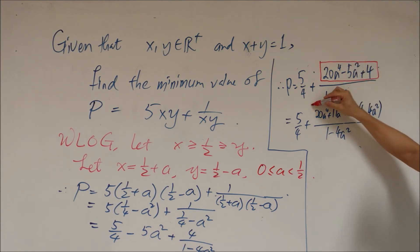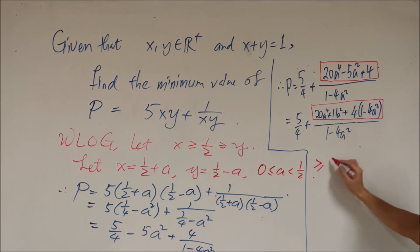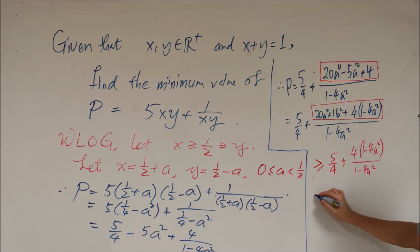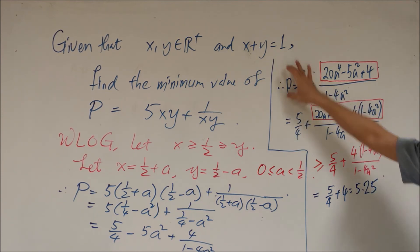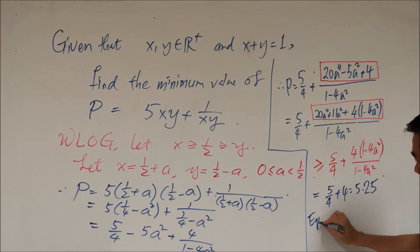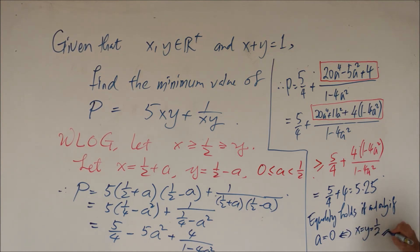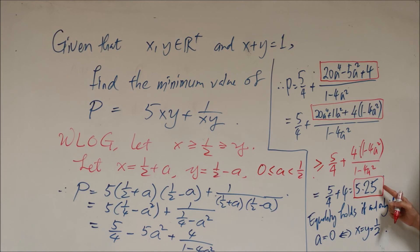We can rewrite this and note that a to the fourth and a squared are all non-negative. So p is greater than or equal to 5 over 4 plus 4 times (1 minus 4a squared) over (1 minus 4a squared). The fraction cancels, giving 5 over 4 plus 4, which equals 5.25. Equality holds if and only if a equals 0, meaning x equals y equals one half. We verify that when x equals y equals one half, the value of p is indeed 5.25, so 5.25 is achievable and is the minimum.